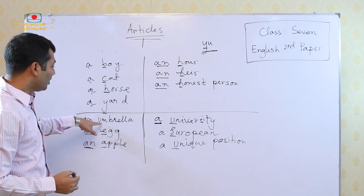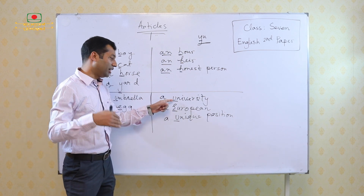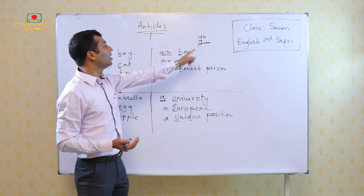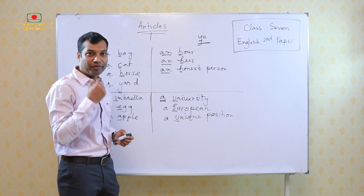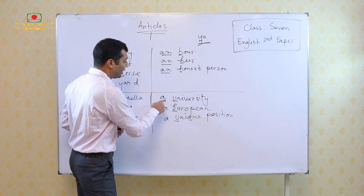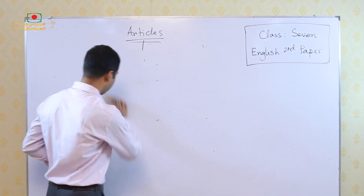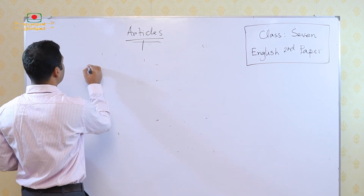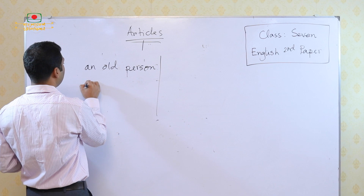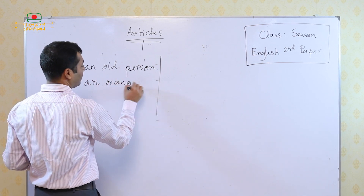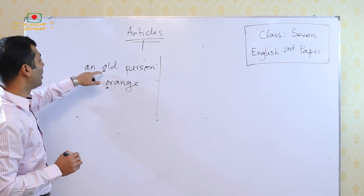So basically, if the initial sound is a vowel, then it takes the article AN. But if the initial sound — it may be a vowel letter — but it is pronounced as a consonant like 'YU', then it will take the article A, not AN. And you know there is a vowel O — for example: an old person, an orange. O is a vowel, and we have used the article AN here as it is a vowel.